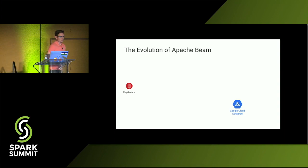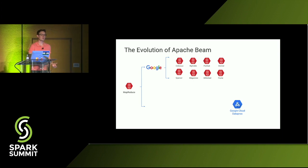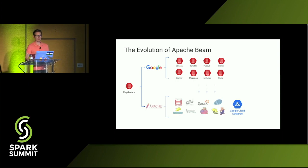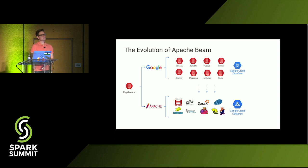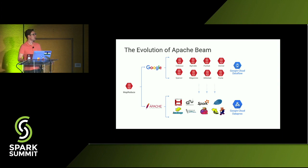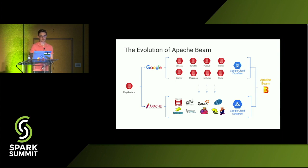A long time ago, Google wrote the MapReduce paper and continued developing technologies that were an evolution of MapReduce. Google was releasing papers on what they did, which influenced the Apache ecosystem. As a result, Google has two products focused on batch and stream processing in Cloud: Google Cloud Dataflow, based on Google's internal innovations, and Google Cloud Dataproc, our managed Spark and Hadoop service. Apache Beam aims to unify these two divergent tracks.